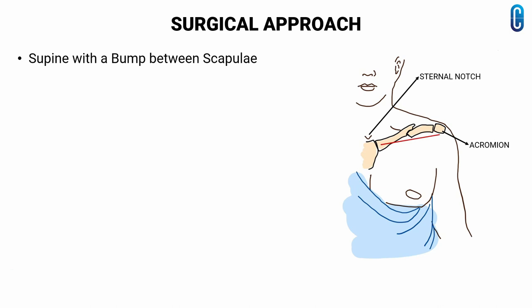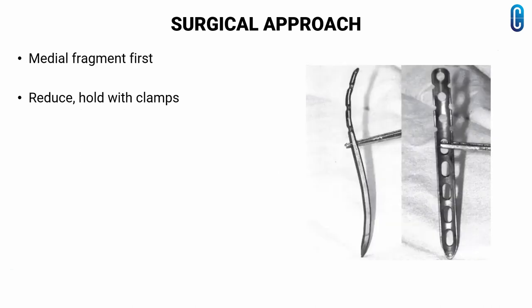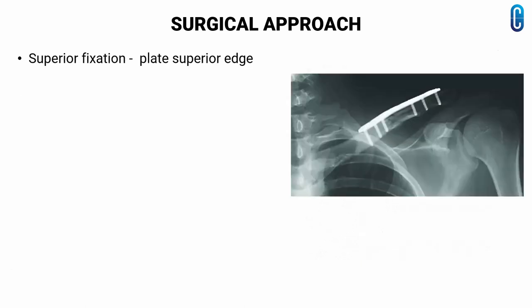For the surgical approach for clavicle fixation, place the patient supine with a large bump placed between the scapulae. Make an incision centered over the fracture from the sternal notch to the anterior edge of the acromion. Incise the clavipectoral fascia and carefully elevate it inferiorly. Dissect first along the medial fragment, reduce the fracture, and hold it with bone clamps. Contour a 3.5mm plate to fit along the antero-inferior edge of the clavicle; typically an 8-hole plate fits well when contoured into an S-shape. It is better to aim the screws for plate fixation posteriorly and superiorly. For superior fixation, contour the plate to fit the superior edge of the clavicle and insert the screws from superior to inferior.